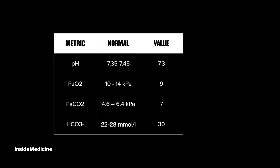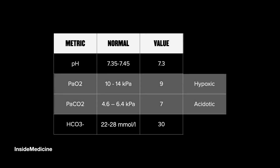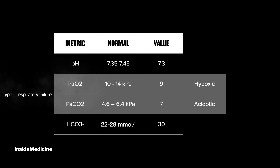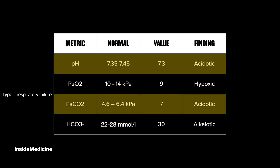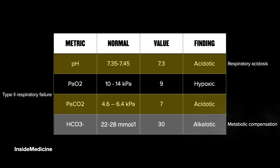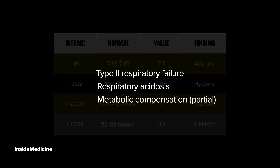Looking at our first ABG example: the patient is hypoxic and retaining CO2, so they're in Type 2 respiratory failure. Next, looking at acid-base — the pH is acidotic. It matches the PaCO2, so it's a respiratory acidosis. The bicarbonate is high, indicating metabolic compensation. However, the pH is not normal, so it's only a partial metabolic compensation. In summary: Type 2 respiratory failure, respiratory acidosis, and partial metabolic compensation.